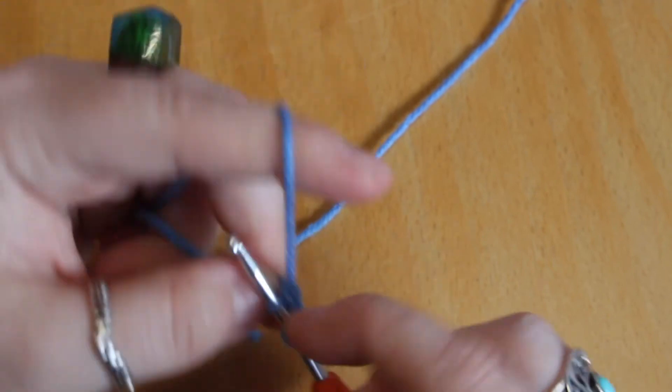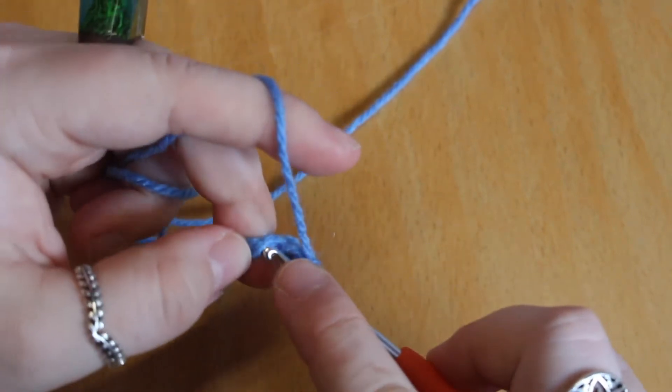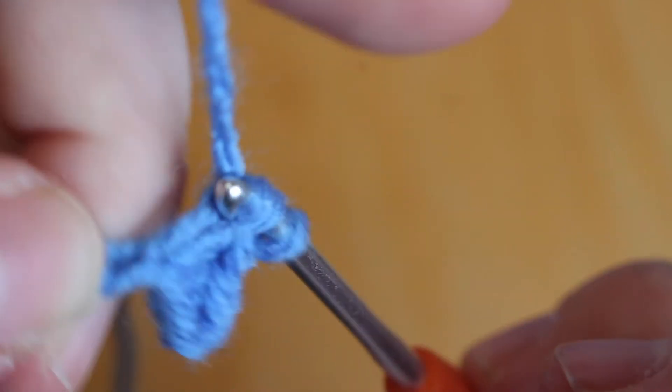Then we're going to single crochet as normal. Continue crocheting only into the back bump of the stitch right along the row.